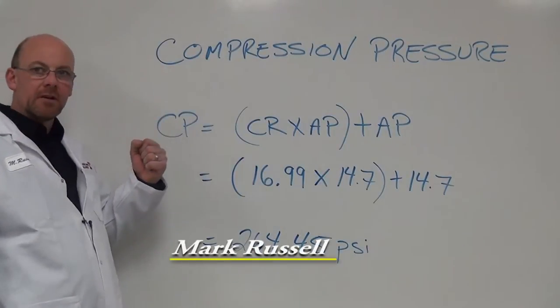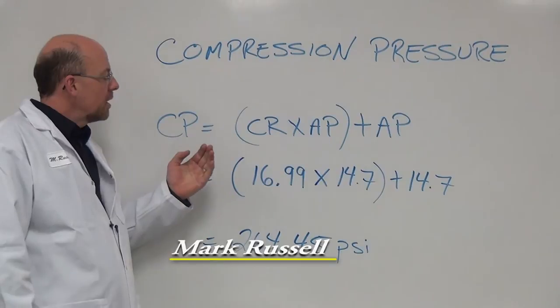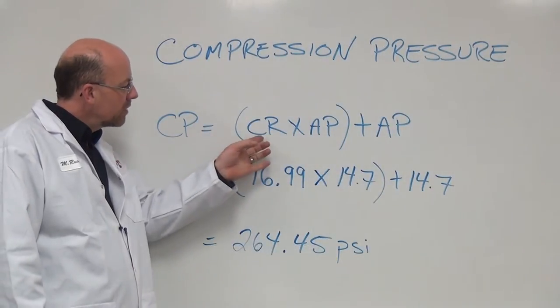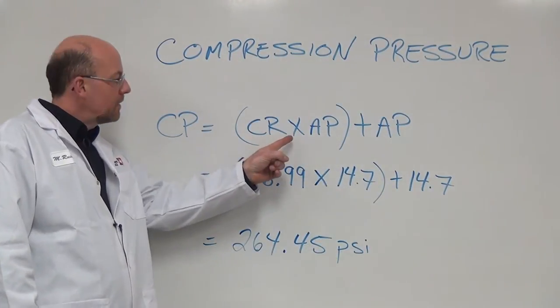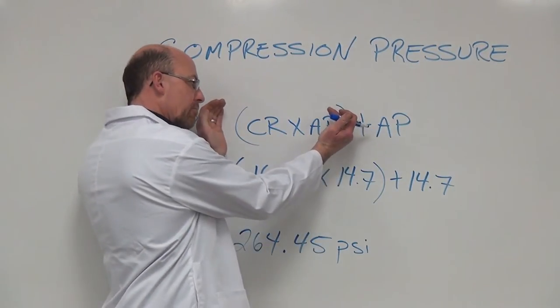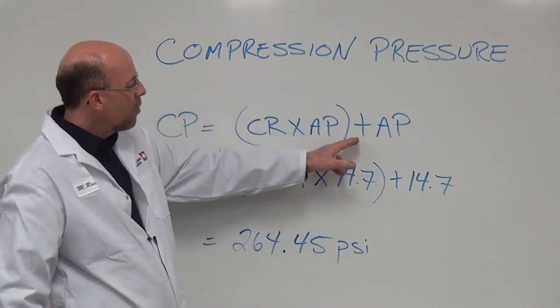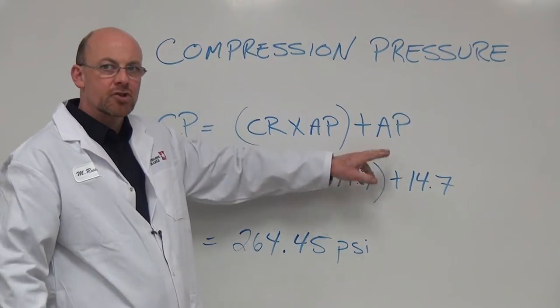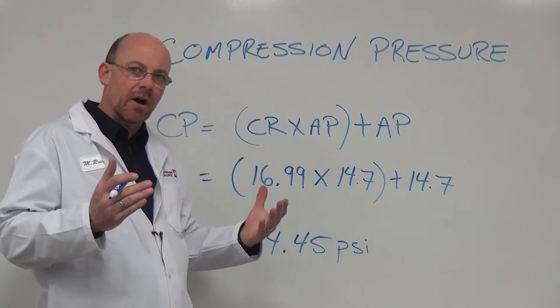Compression pressure. When we take a look at compression pressure, compression pressure equals compression ratio times atmospheric pressure. And of course we do anything that's in brackets first, and then we always have to add atmospheric pressure because that's around us all the time.